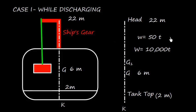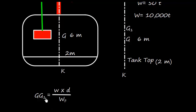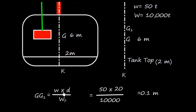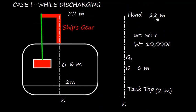So we can easily work out the shift of center of gravity. GG1 is equal to W into D divided by WF, where W is the weight and D is the distance shifted and WF is the final weight. We'll use these numbers: W is 50 tons, and D is the distance shifted, so distance shifted is from 2 meters to 22 meters.